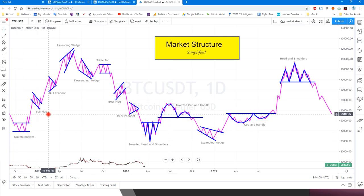we see double bottom, we see bull flag, bull pennant, we see ascending triangle, descending wedge, triple top, bear flag, bear pennant, inverted head and shoulders, expanding wedge, cup and handle, and head and shoulders. But these are the most reliable, well-known, supported patterns.